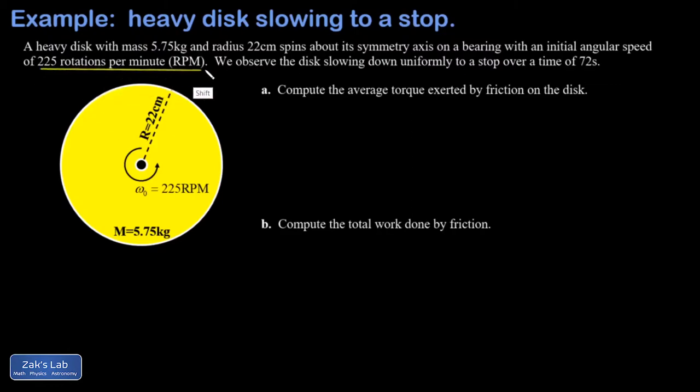We're told that the disc slows down uniformly to a stop after 72 seconds. In part a, we're asked to get the average torque exerted by friction in order to slow this thing down. In part b, we want to get the total work done by friction as this thing slows down.